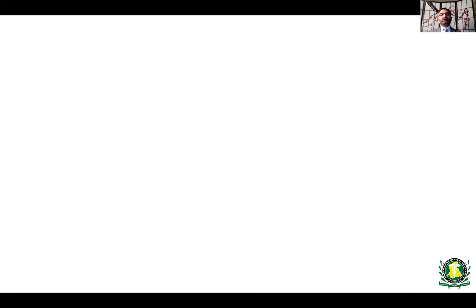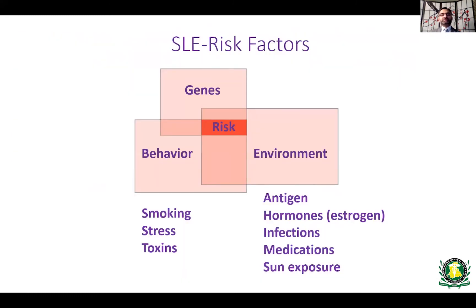Now let's talk about the pathogenesis of lupus. There are certain risk factors for developing this autoimmune, multi-system inflammatory disease. There is a genetic risk factor — certain genes have been identified, and if somebody is born with those genetic risk factors, they are more likely to have lupus. On top of that, there are environmental triggers: risk behaviors such as smoking, stress, certain toxins, antigens, hormones — most commonly estrogen — certain infections, medications, and sun exposure. All of these coming together lead to an increased risk of developing lupus.